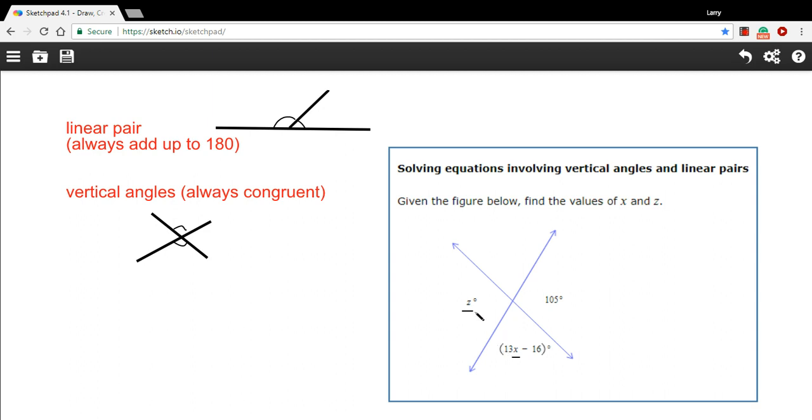z shouldn't be too hard if we know about vertical angles. Vertical angles are those angles that are across from each other when two straight lines intersect. The thing about vertical angles is that they're always the same—they're congruent. So if this side is 105, z is 105.